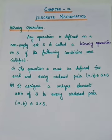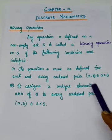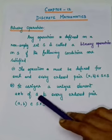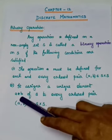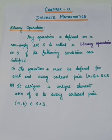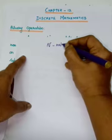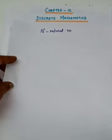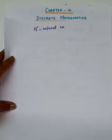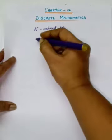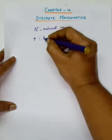S cross S is the Cartesian product of the set. The operation must be defined for each and every ordered pair belonging to S cross S, and it assigns a unique element a asterisk b of S to every ordered pair (a, b) belonging to S cross S.